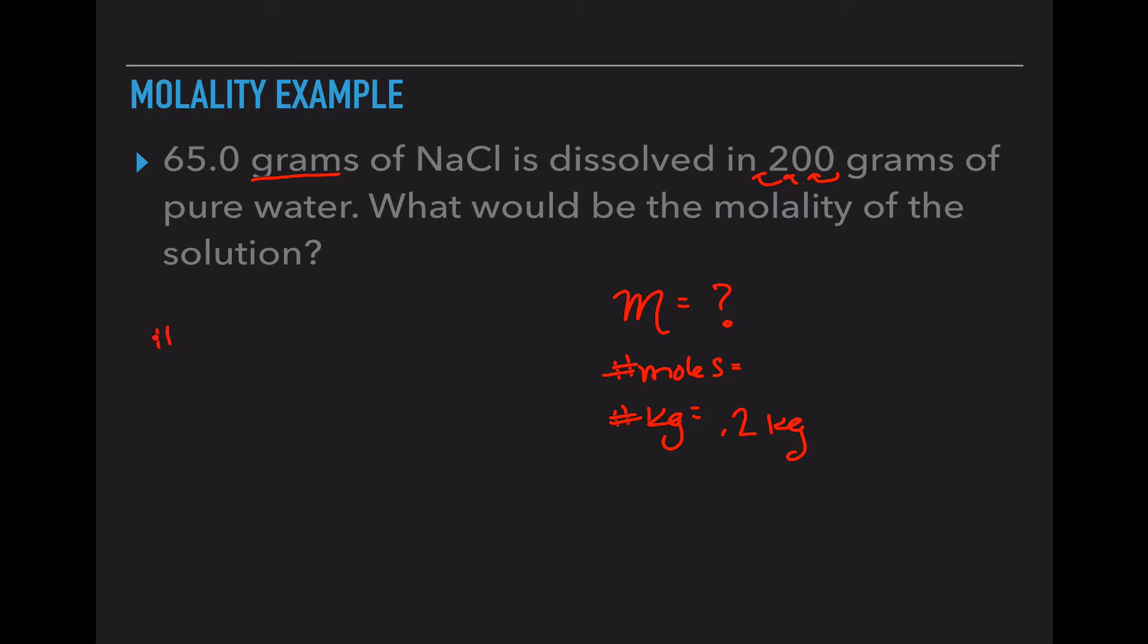Again, we're going to use that equation from the previous unit: number of moles, sample mass, and molar mass. My sample mass is 65 grams. My molar mass of NaCl is 58 grams, a sodium and one chlorine added together. So my equation is 65 divided by 58, which is 1.12 moles.